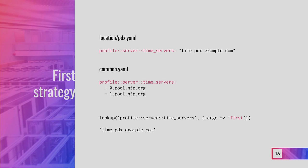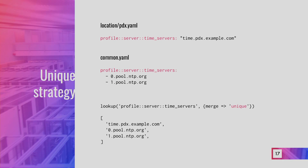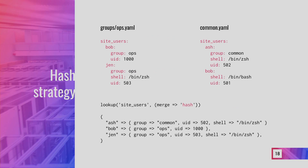Let's start with examples. For the 'first' strategy: we have two files — 'location/pdx.yaml' and 'common.yaml', with the top one having more priority. The same key 'profile::server_time_service' is defined in both. When we perform a lookup specifying the 'first' strategy, it returns just the first value from the highest-priority file and stops — it doesn't deal with any other values. For the 'unique' strategy using the same files, it goes through all hierarchy levels, collecting all contents and returning a single flattened array.